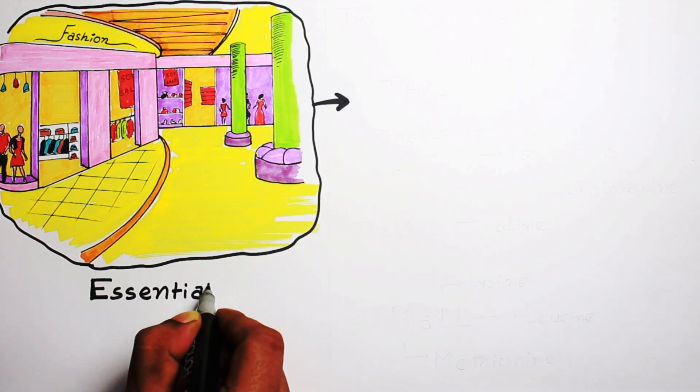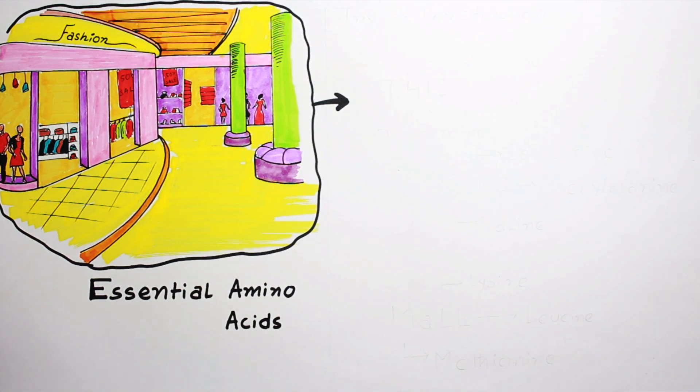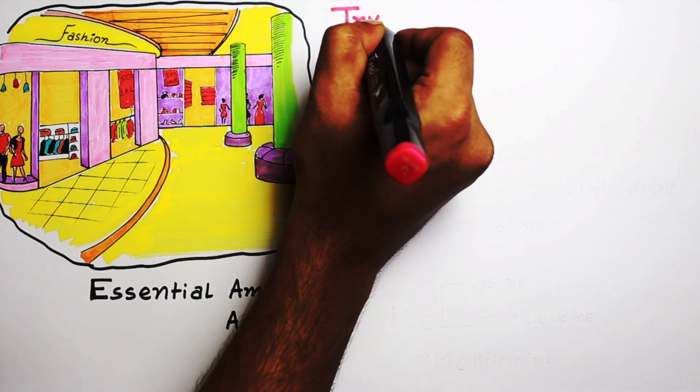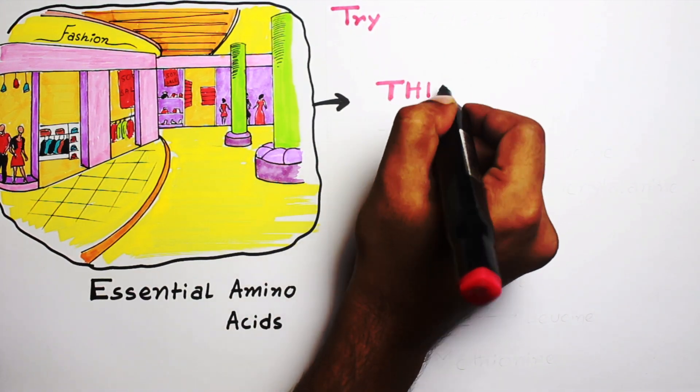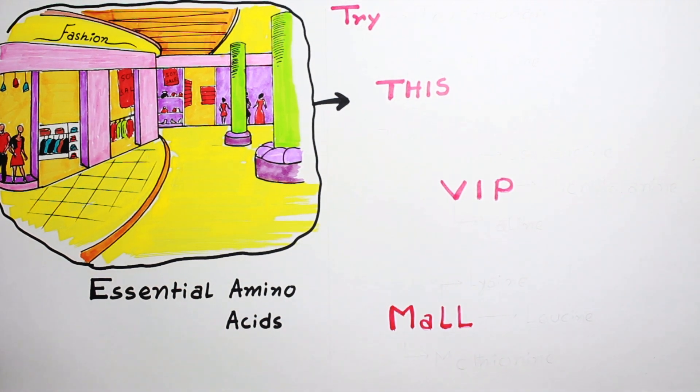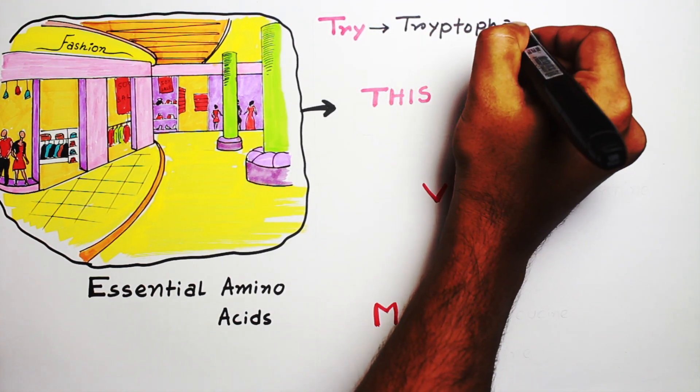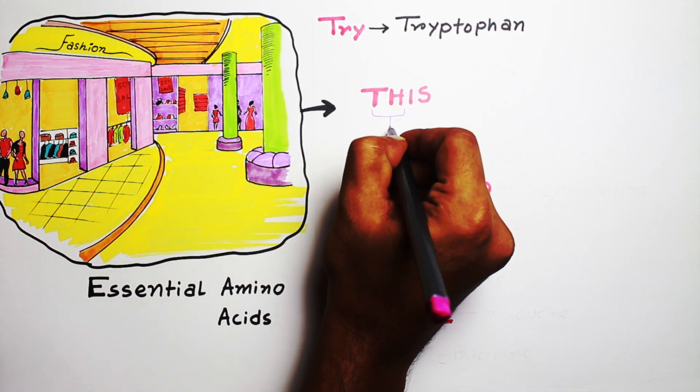Here I have drawn a shopping mall which is related to the mnemonic, and the mnemonic is very simple. It is 'Try This VIP Mall.' That's it. So here, 'Try' represents tryptophan. Then come to 'This.' 'Th' represents